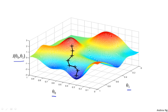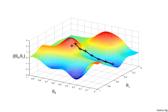Gradient descent has an interesting property. The first time we ran gradient descent, we were starting at this point over here. Now imagine we had initialized gradient descent just a couple of steps to the right — starting from that point on the upper right. If you were to repeat this process: start from that point, look all around, take a little step in the direction of steepest descent, and so on — gradient descent would have taken you to a second local optimum over on the right. So depending on where you start, you can wind up at a very different local optimum. This is a property of gradient descent that we'll say more about later.